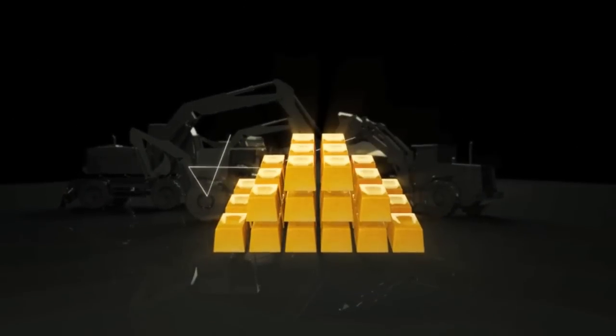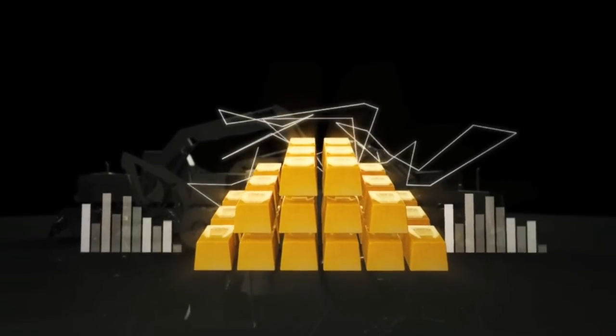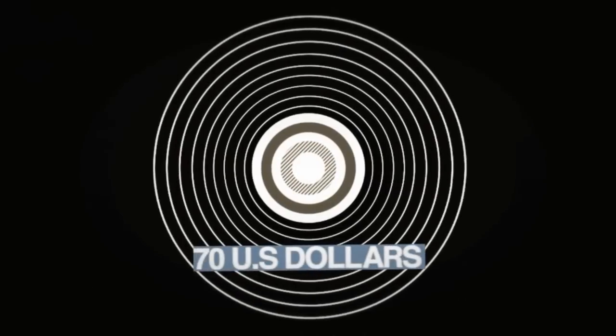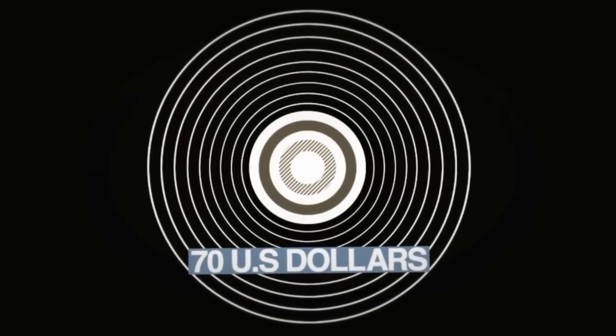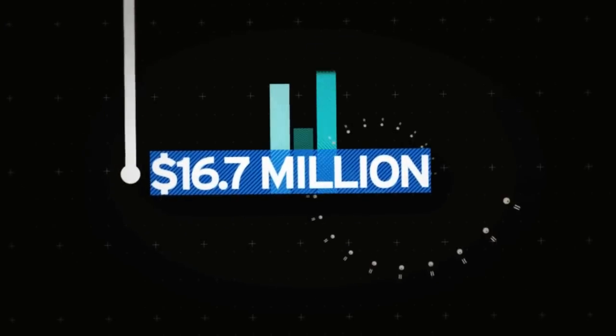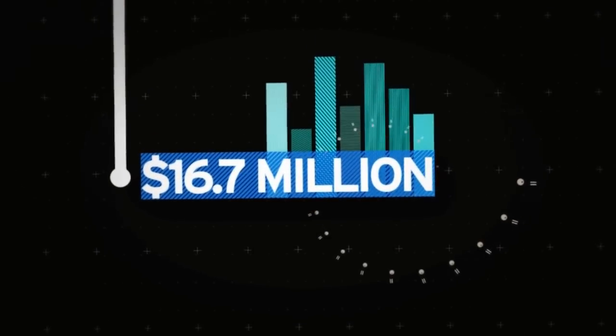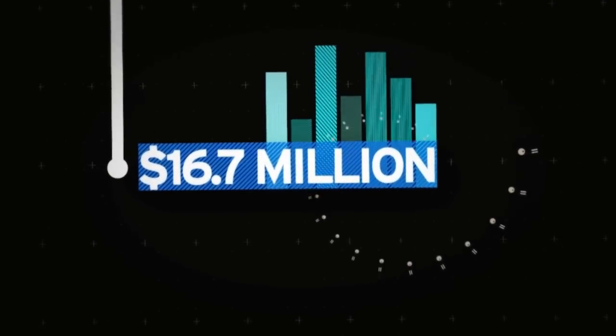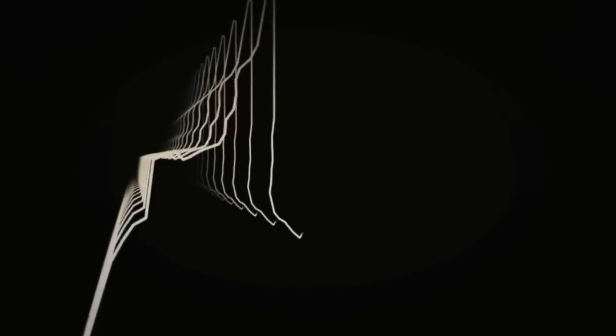Since the Rothschilds took over the Bank of England around 1815, they have been expanding their banking control over all the countries of the world. Their method has been to get a country's corrupt politicians to accept massive loans which they can never repay and thus go into debt to the Rothschilds banking powers. If a leader refuses to accept the loan, he is oftentimes either ousted or assassinated. And if that fails, invasions can follow and a Rothschilds usury-based bank is established.